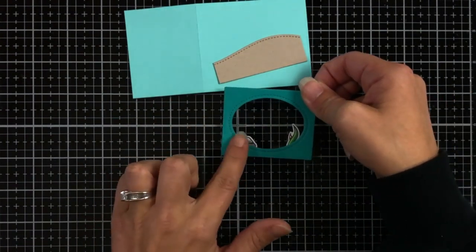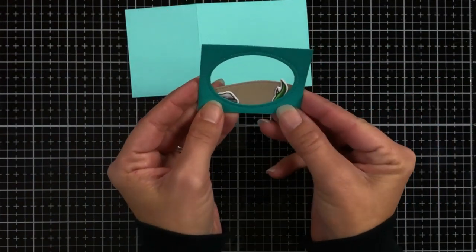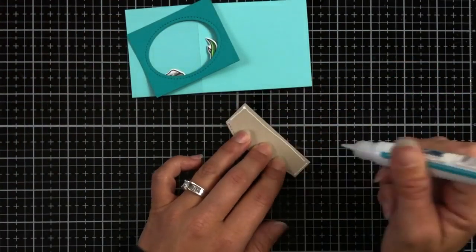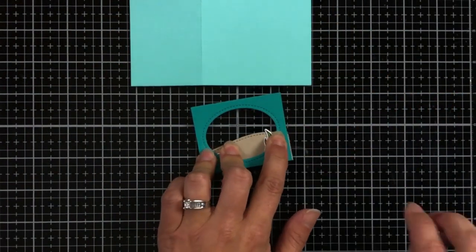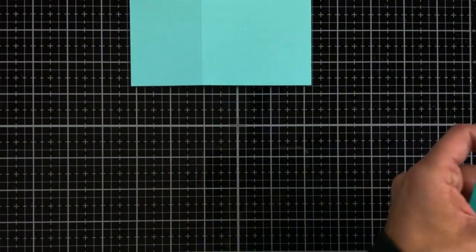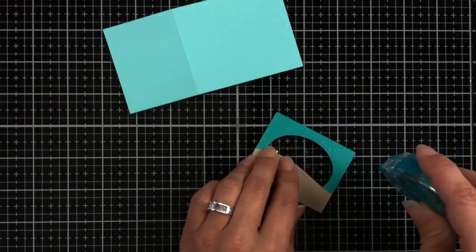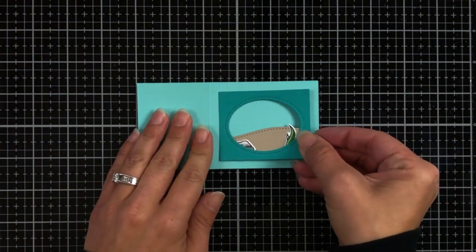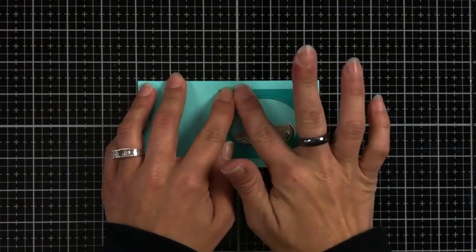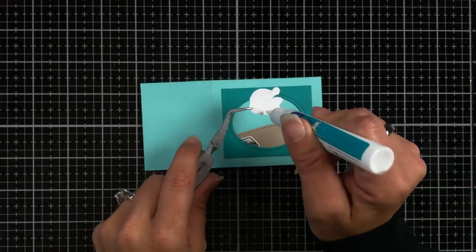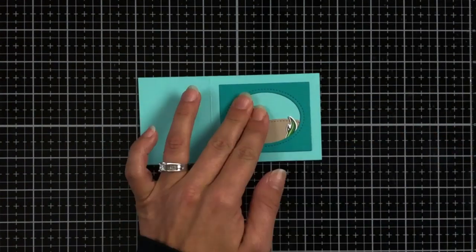And then I trimmed down that fourth sand bank that I had die cut earlier from the craft cardstock. So I trimmed that down to fit behind my window, decorated that with some of the extra rocks and seaweed that I have. And then I can trim off any excess that's hanging over and attach that to my card front. Now I also had some extra fish. So I'm going to put the fish in there.